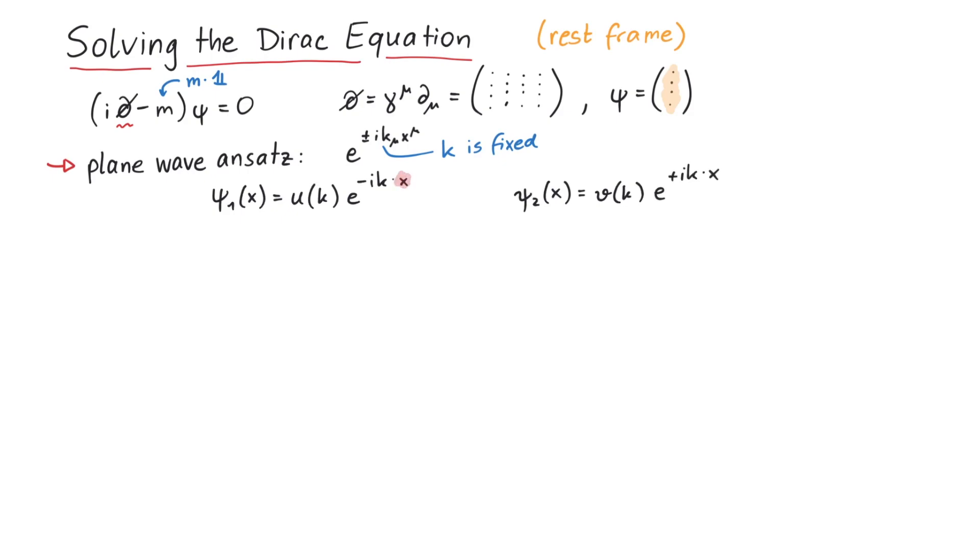The exponential factor is responsible for the position dependence of psi, whereas u and v express the spin state of psi. Notice that in the case of u, we have an exponential factor of e to the minus i e t, whereas for v, e to the plus i e t. The first one is the usual time dependence phase we know from non-relativistic quantum mechanics, but the other one apparently has the wrong sign. Historically, this has caused a lot of confusion, since it looks like negative energy, but nowadays we interpret these states as antiparticles.